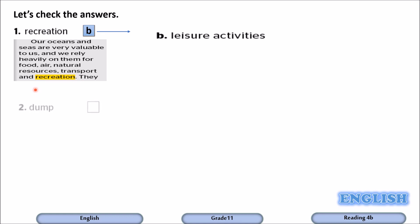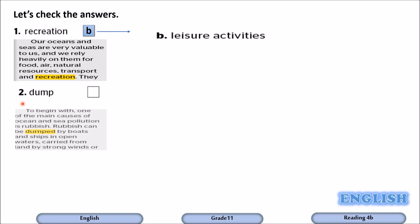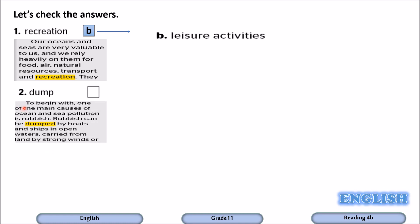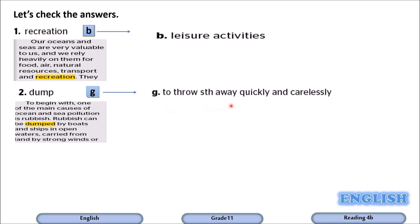Word number two is dump. The sentence reads: 'One of the main causes of ocean and sea pollution is rubbish. Rubbish can be dumped by boats and ships in open waters, carried from land by strong winds.' Dump means to throw something away quickly and carelessly. It goes with G.